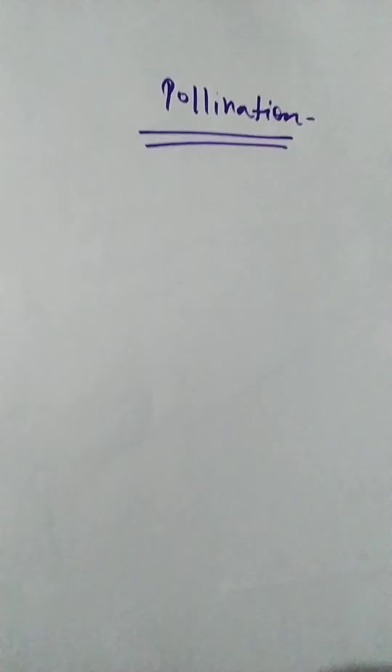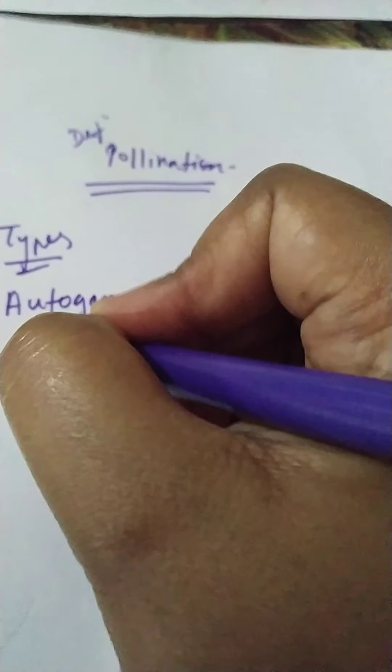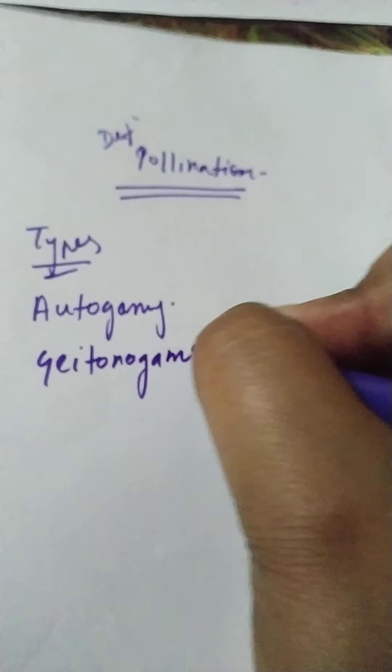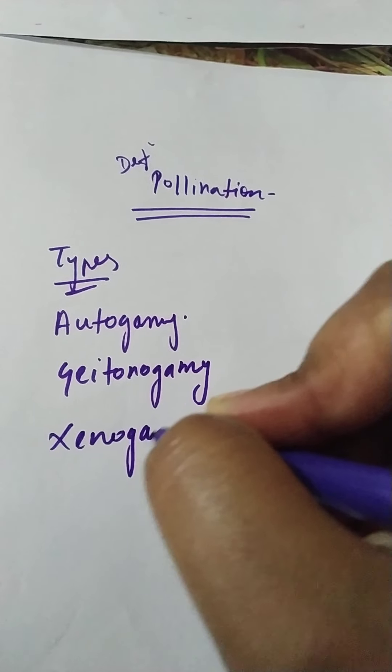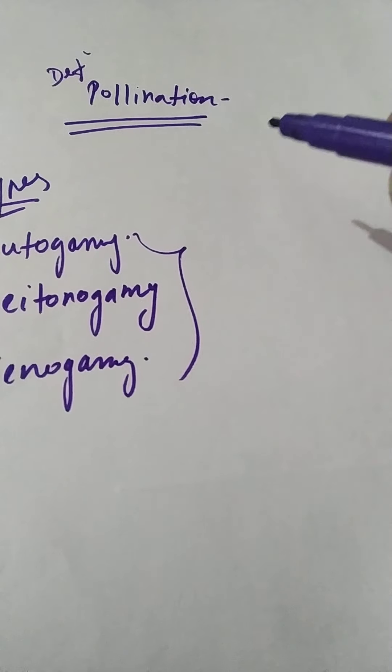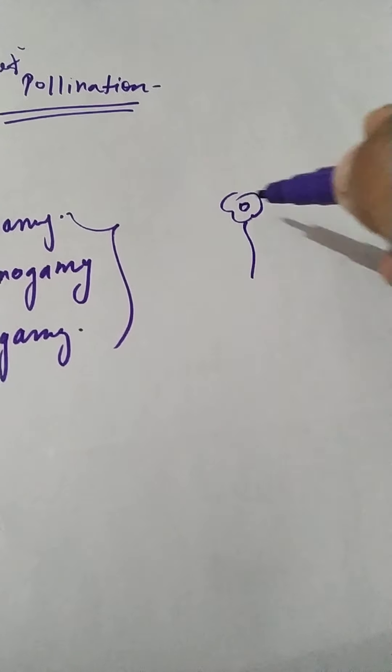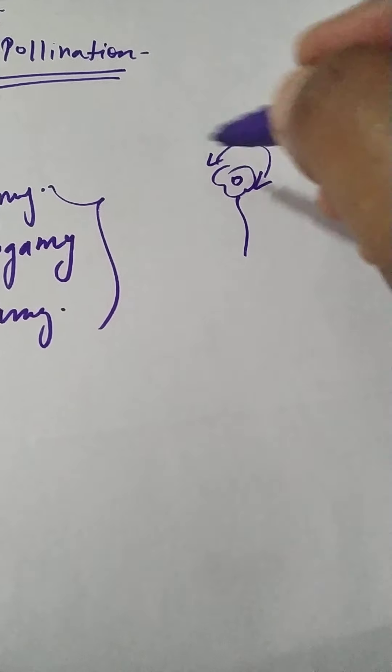Today I will discuss another part of pollination. I have already discussed the definitions and types like autogamy, xenogamy, and allogamy. To refresh your mind: in self-pollination, pollen transfers from the anther to the stigma of the same flower or same plant — that is autogamy.